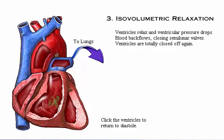In the third phase of the cardiac cycle, isovolumetric relaxation, the ventricles relax and ventricular pressure drops. Blood in the aorta and pulmonary trunk backflows toward the heart, closing the semilunar valves. The ventricles are totally closed off again in this isovolumetric relaxation phase.